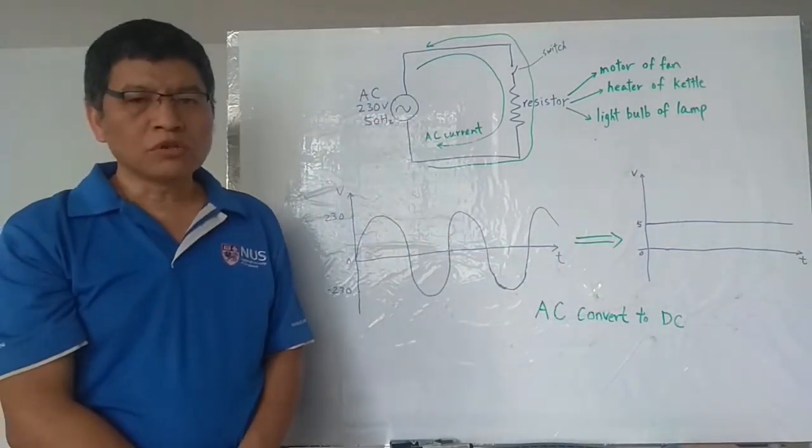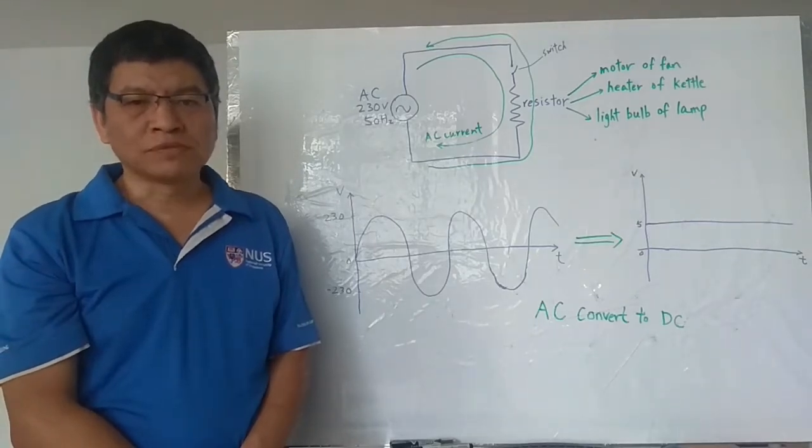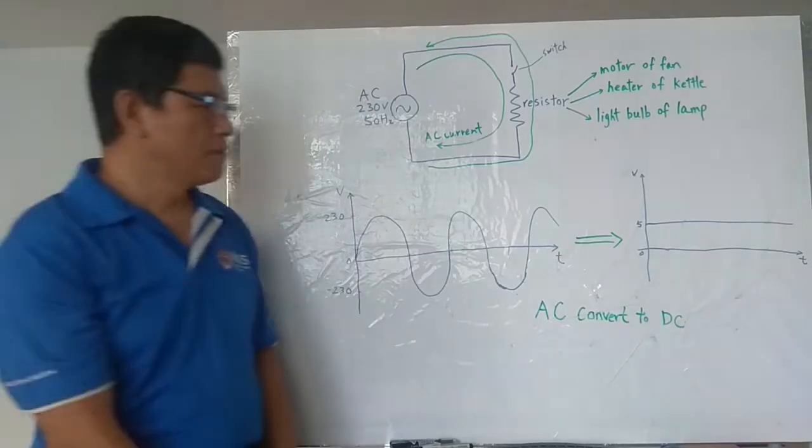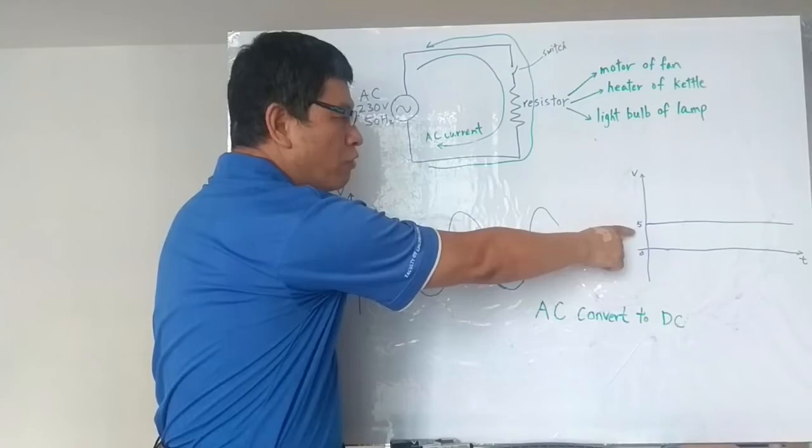So, although the input is AC voltage, the appliance have a function to step down the 230V AC and convert to either 5V, 12V or 24V DC.